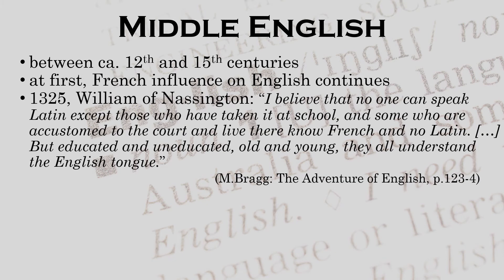In the 14th century, William of Nassington wrote in English about who spoke which language. He wrote: 'I believe that no one can speak Latin except those who have taken it at school. And some who are accustomed to the court and live there know French and no Latin. And some whose grasp of French is shaky know a bit of Latin. And some understand English well who know neither Latin nor French. But educated and uneducated, old and young — they all understand the English tongue.' So also the aristocracy was moving away from French and adopting English.